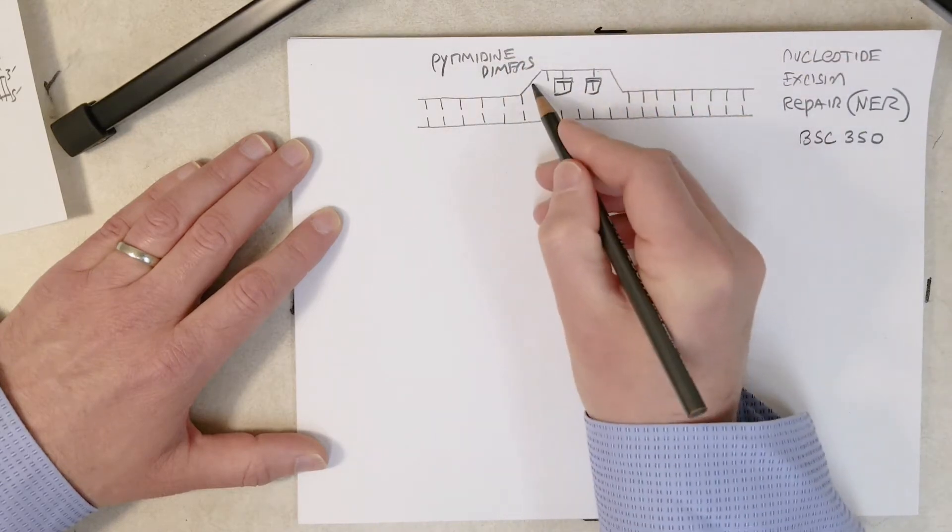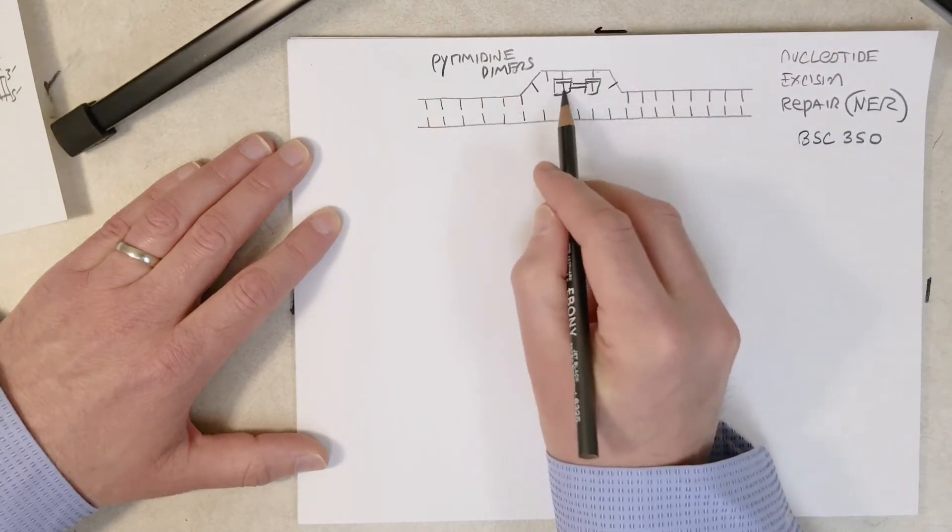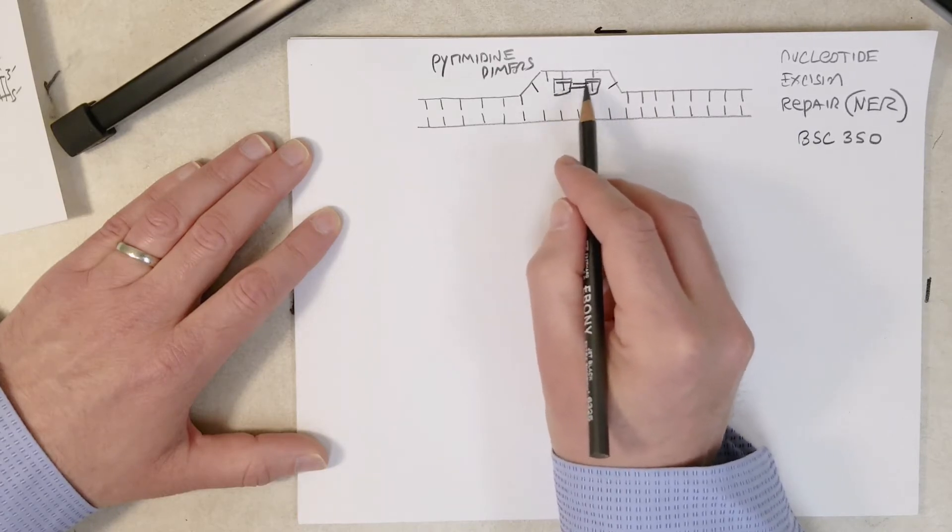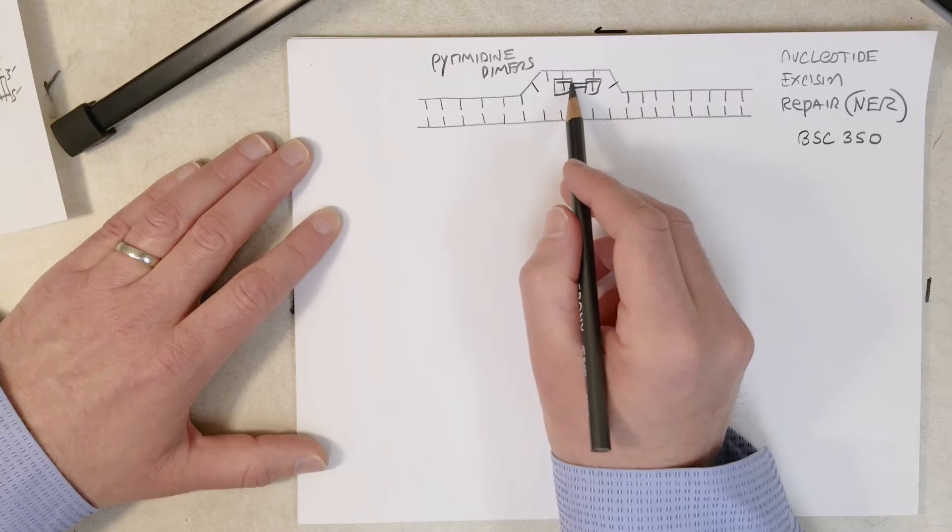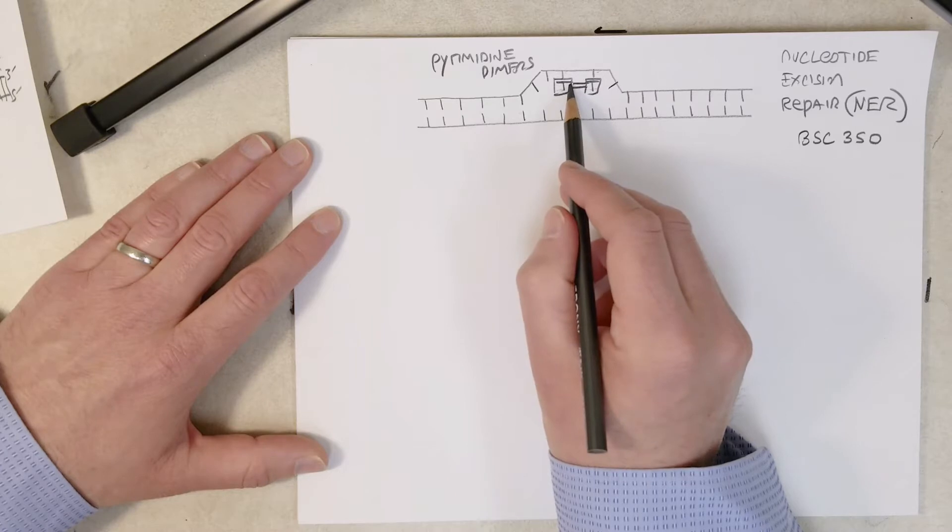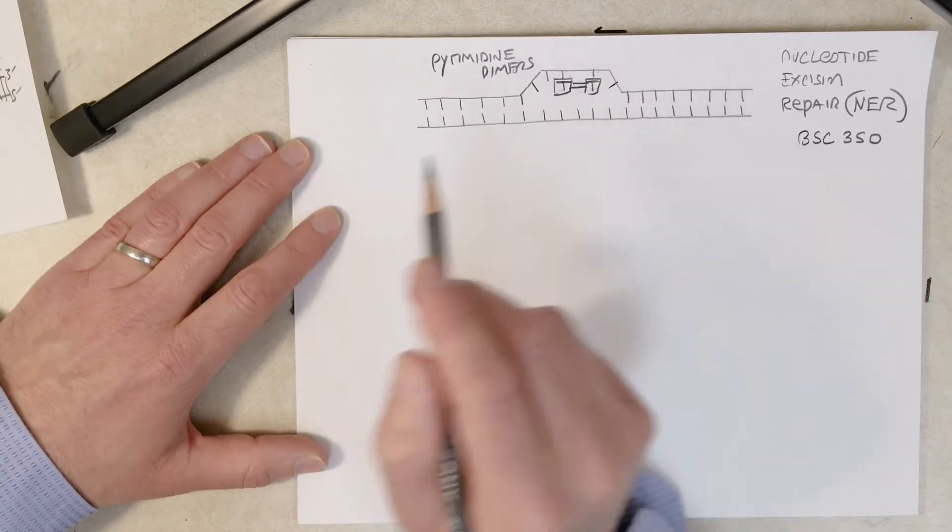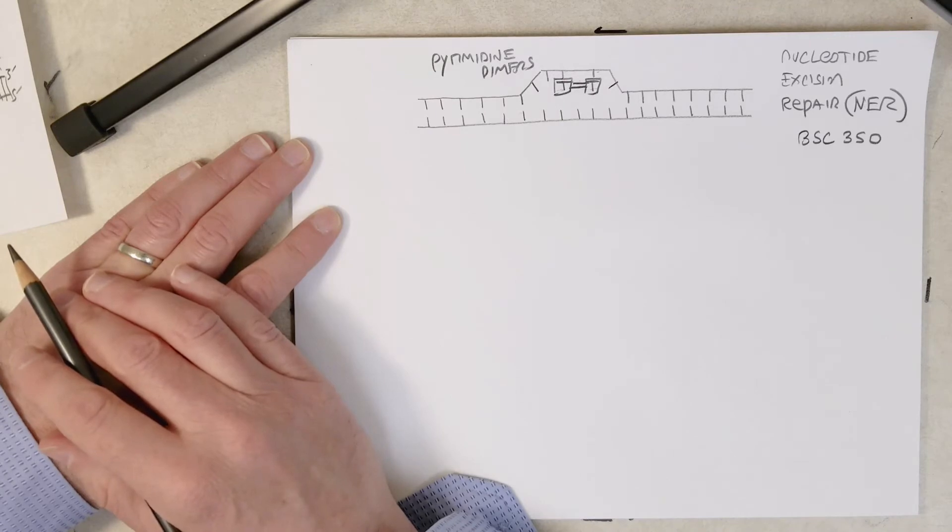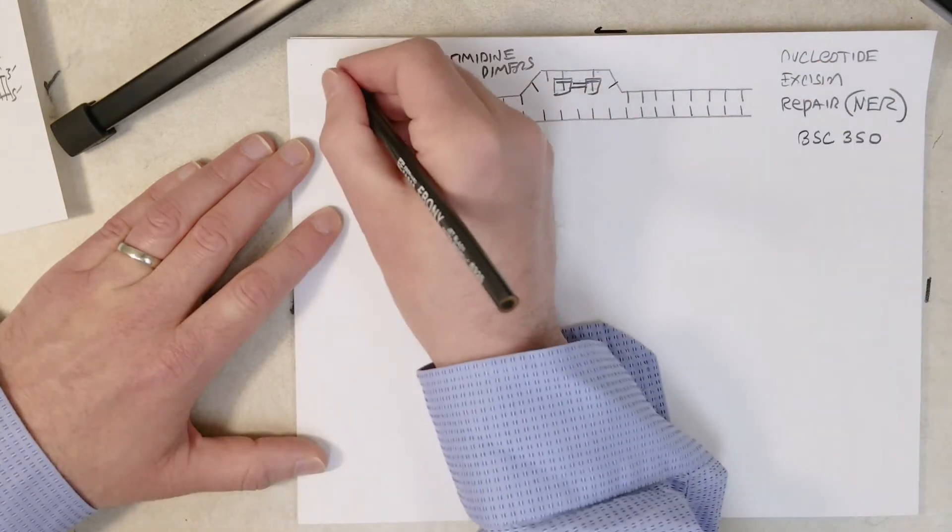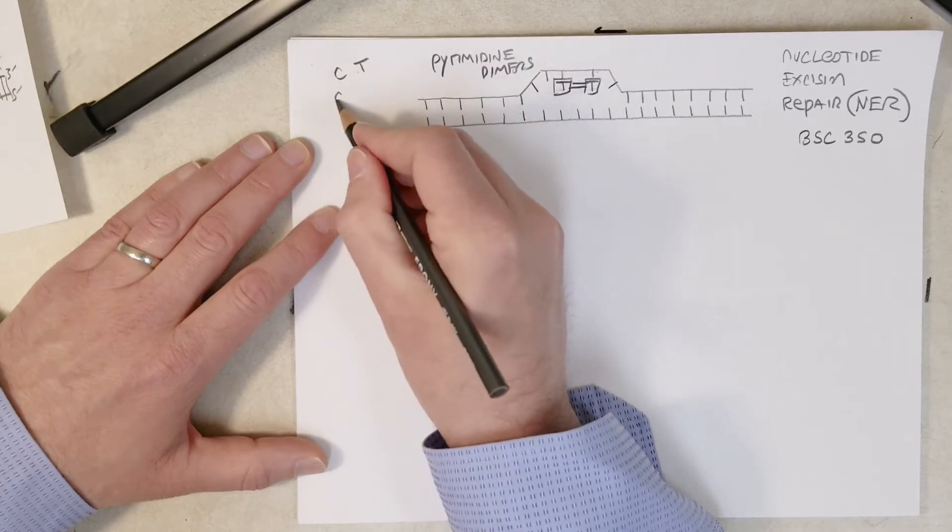Pyrimidine dimers, so here we go. We have two T's, two thymine nucleotides next to each other in a strand of DNA. They absorb the photons from the UV light, causes a rearrangement of the electrons in the nitrogenous bases, and we get these two covalent bonds formed between these adjacent thymines. We can also get them between C and T's that are next to each other and two C's that are next to each other, but most commonly it is between two thymines.